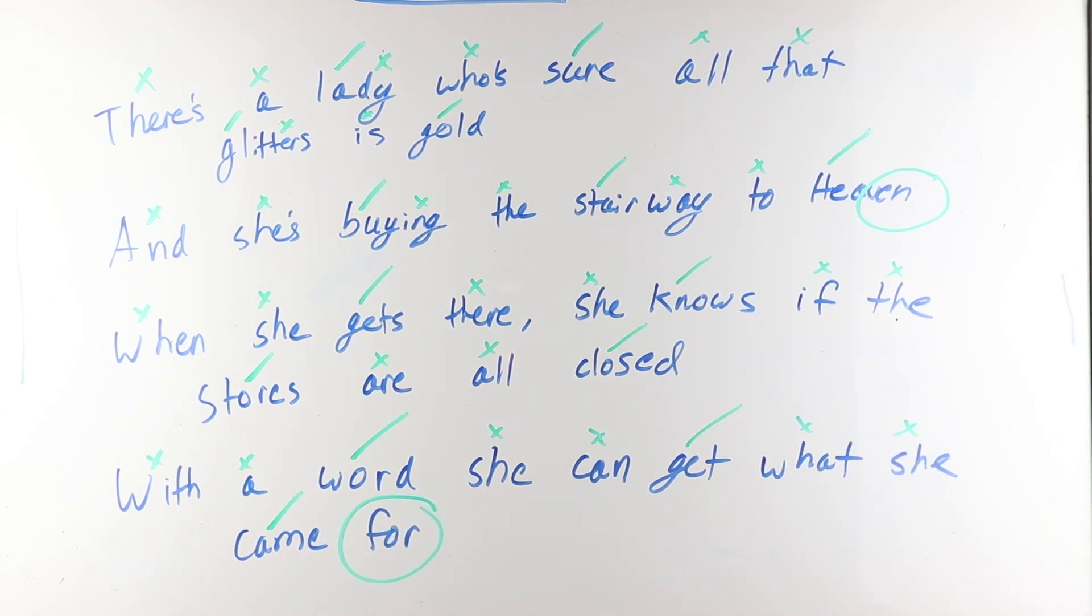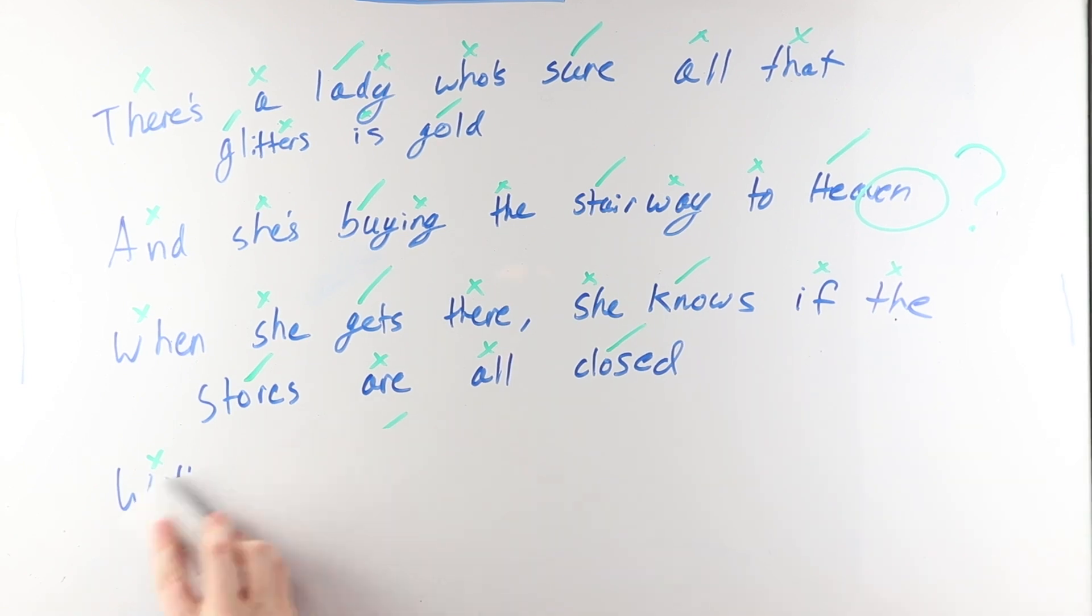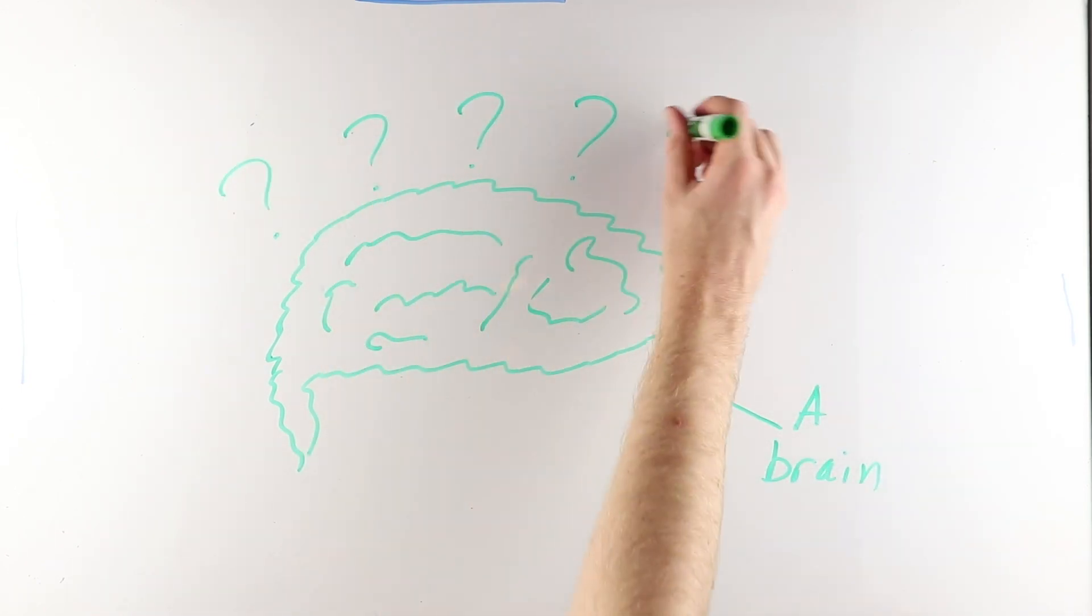Will it work? Can she do it? And then the fourth line, with a word she can get what she came for, the extra syllable leaves us with the question, What did she come for? By leaving an extra syllable outside the rhythm, Plant creates a question in our minds, adding tension as the questions go unanswered.